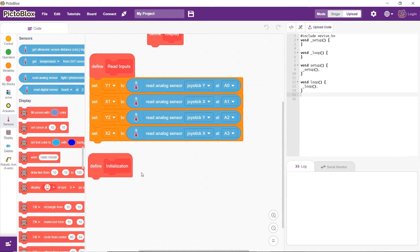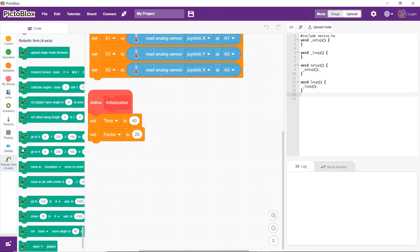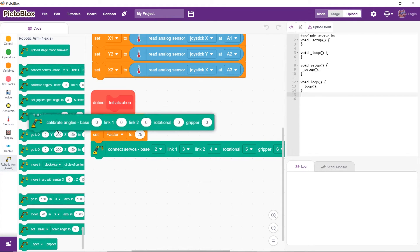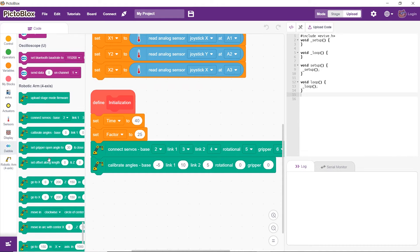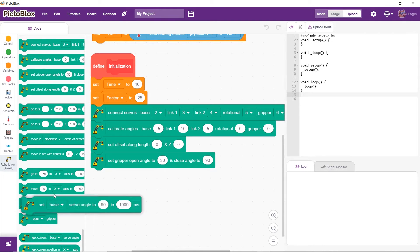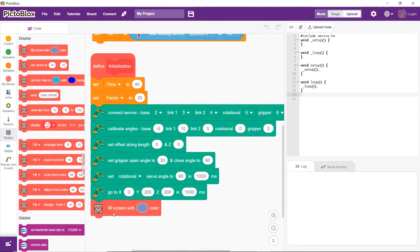Under the initialize block, first set the variable's time to 40 and factor to 25. Then, connect these servo motors to their PWM pins and then calibrate their angles. You can also add an offset if required. Next, set the gripper open and close angles.